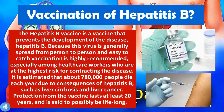The Hepatitis B vaccine prevents the development of Hepatitis B disease. Because this virus spreads easily from person to person, vaccination is highly recommended, especially among healthcare workers who are at the highest risk. It is estimated that about 780,000 people die each year due to consequences of Hepatitis B such as liver cirrhosis and liver cancer. Protection from the vaccine lasts at least 20 years and is said to possibly be lifelong.